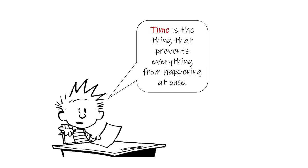If you think about it, if something has changed, then time had to have elapsed. You cannot be in two different positions at the same time. If you're changing your position from one point to the next, then time had to have elapsed in order for you to change that position. Time is the thing that prevents everything from happening at once.